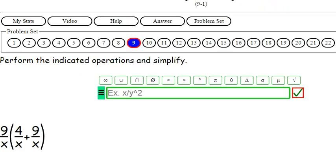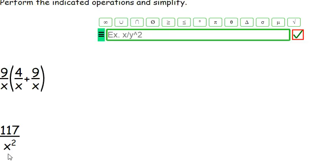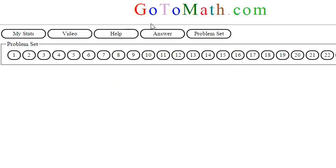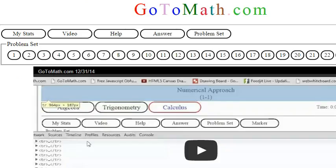And we're done. I think that was pretty easy. Alright, 117 over x squared. So over here at GoToMath.com, see you in the next problem.